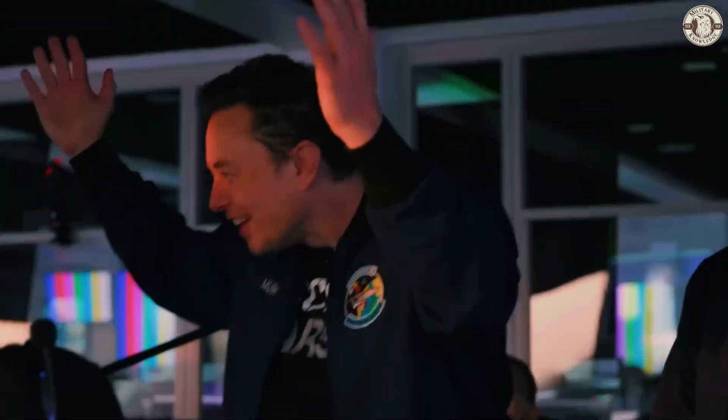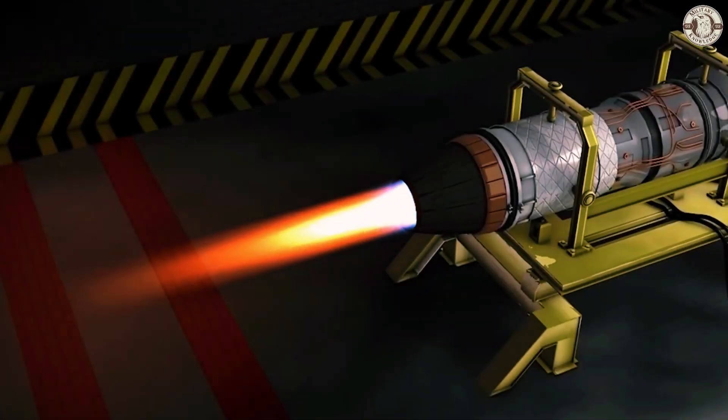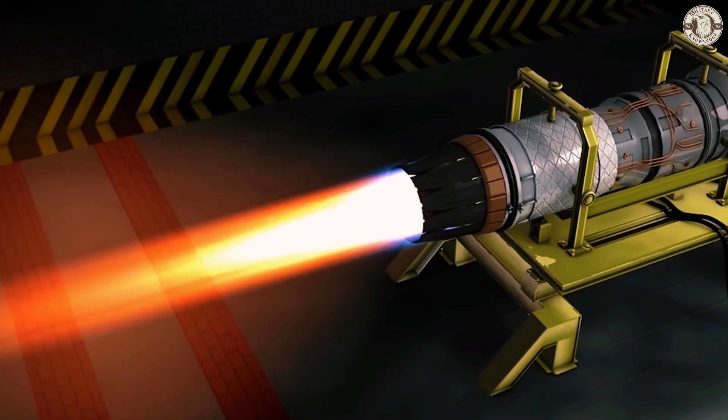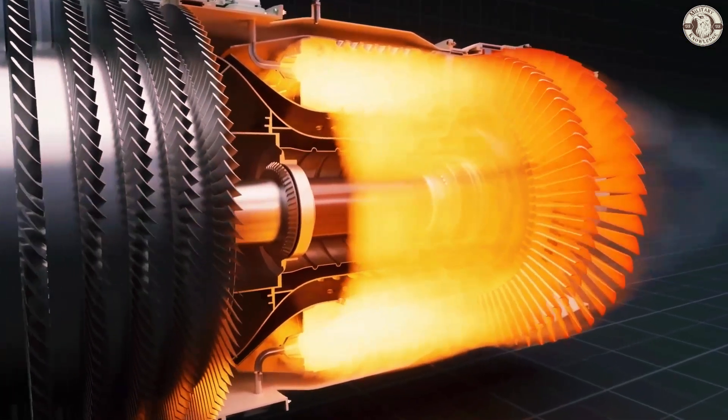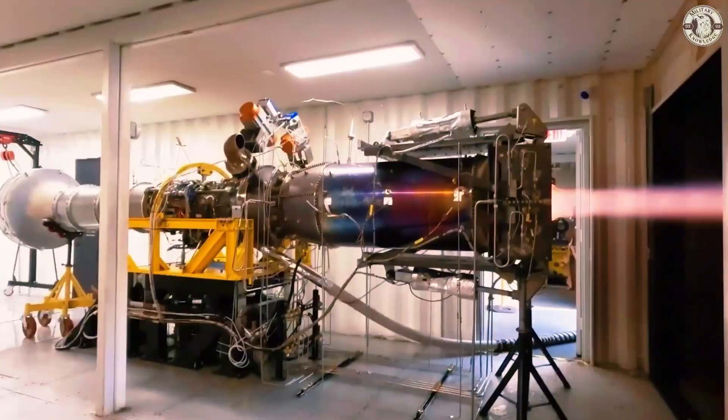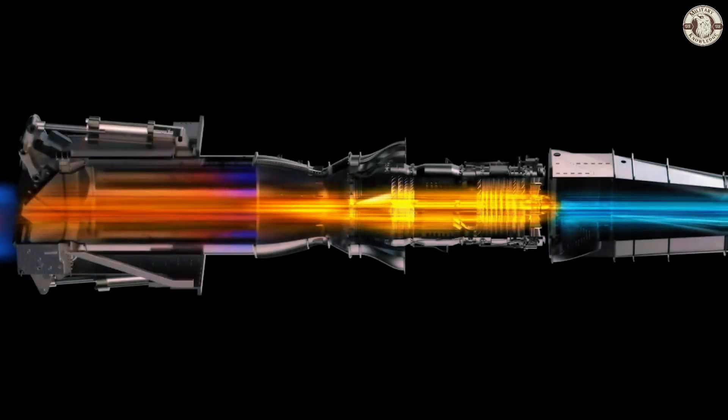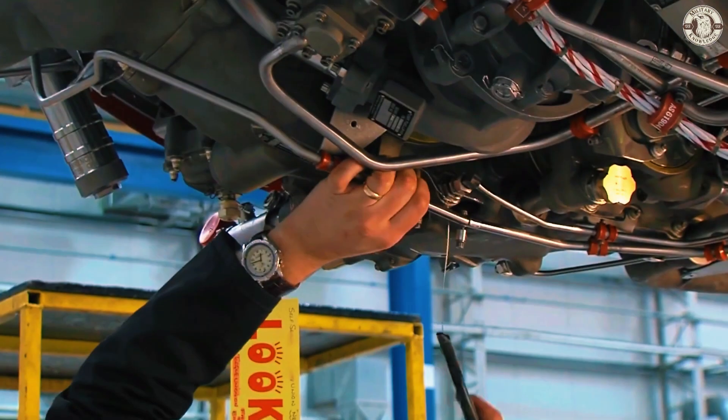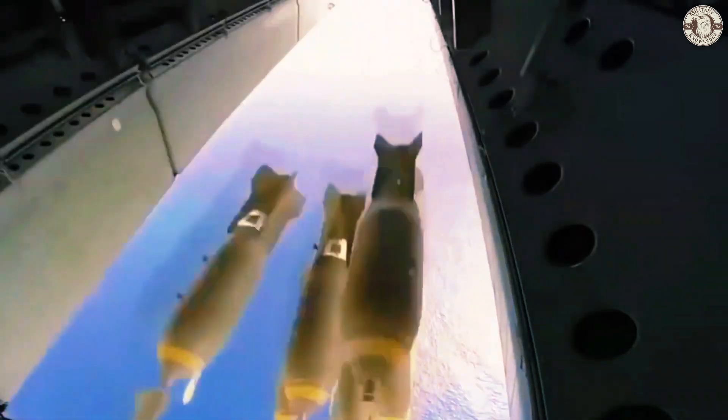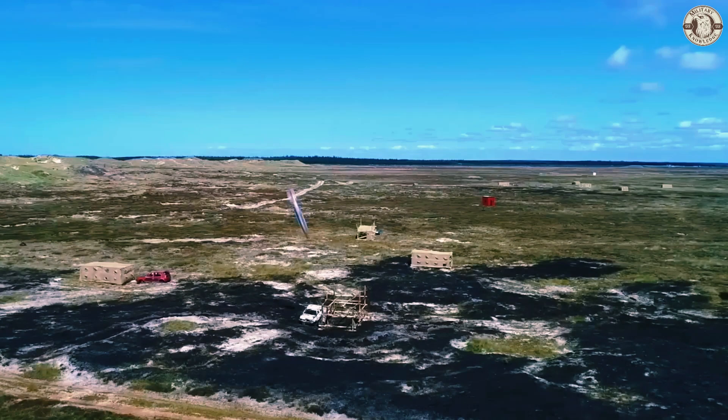The real magic behind these hypersonic planes lies in their cooling systems. At Mach 5, the speed is so extreme that the friction between the plane and the air becomes a serious issue. This friction heats the air entering the engine to temperatures so high that it could actually destroy the engine. We're talking about heat levels that could melt steel.